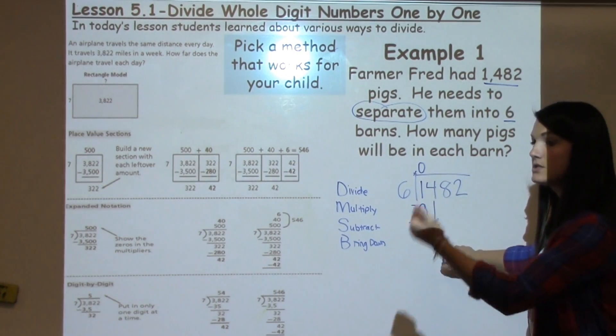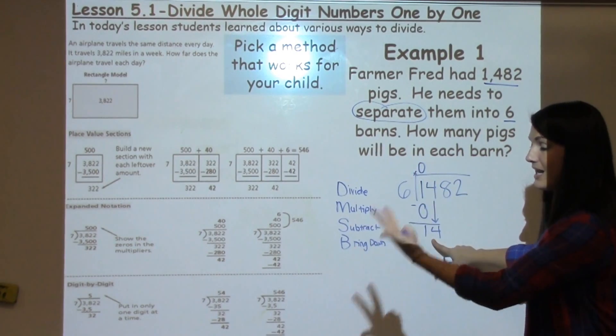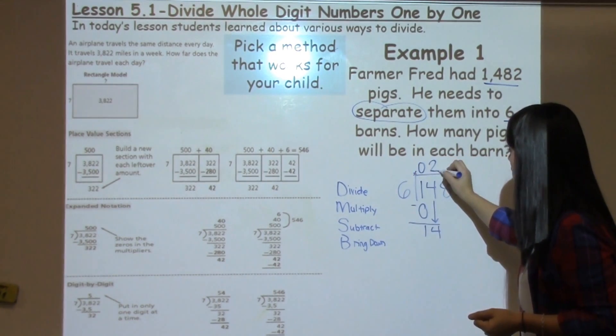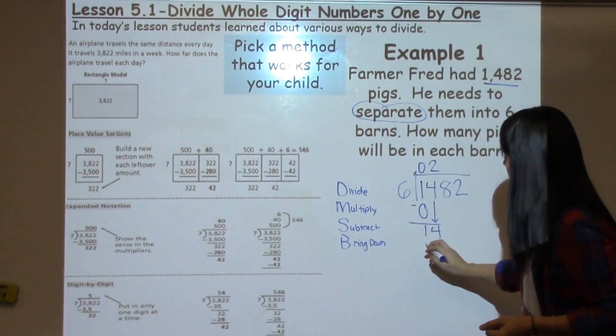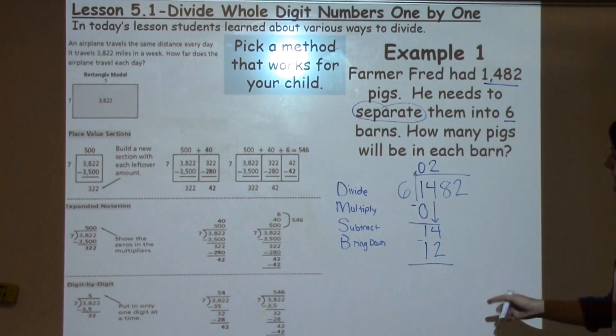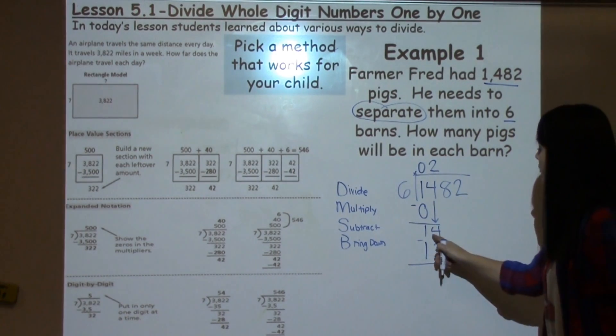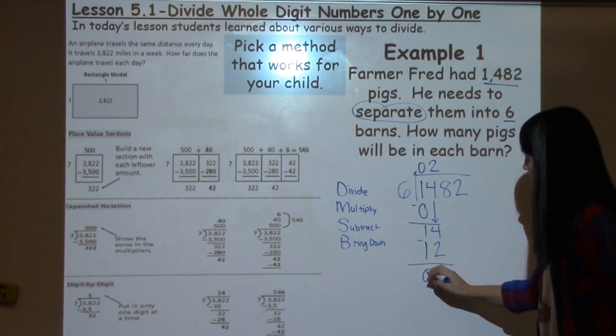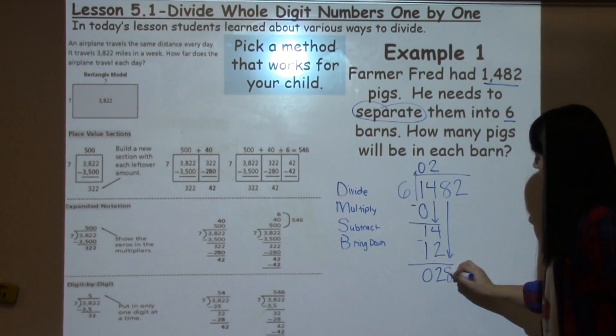So I can count by 6's or I could think 6 times what gets me close to 14 without going over? So 6, 12, 18. 18 is too much. So I want to use 6 times 2 which gives me 12. I write it down below. And now I'm down to my subtraction step. 4 minus 2 is 2. 1 minus 1 is 0. And I bring down my 8.